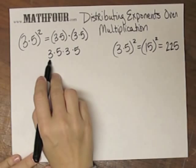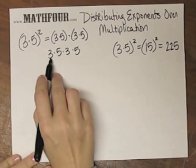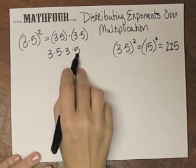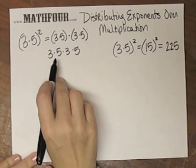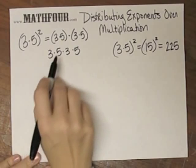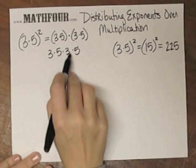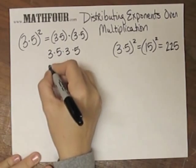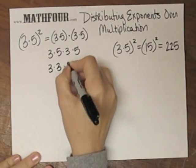We have this other fancy property called the associative property, which means the scooch around property, that says that if I have the same thing all over the place here with multiplication, I can scooch these around. So I'm going to scooch them around so that I have 3 times 3 times 5 times 5.